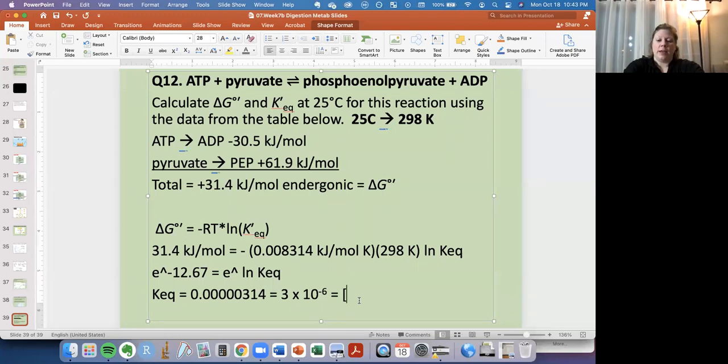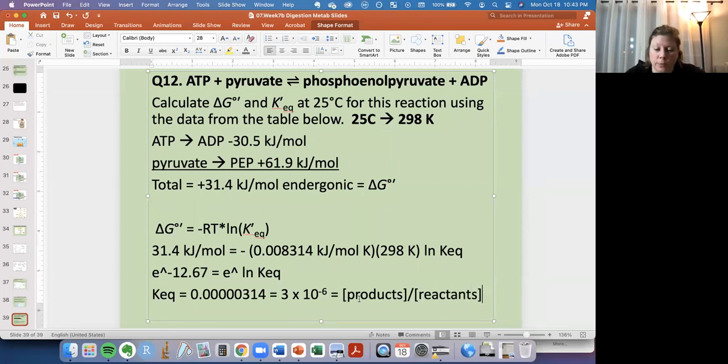And remember our KEQ is products over reactants. Our products are PEP and ADP and our reactants are ATP and pyruvate. So this is a number less than one. That's telling me that this is a very small number and this is a very large number. So that's our Delta G we calculated that using the table and our KEQ, we calculated using the equation that takes advantage of Delta G.